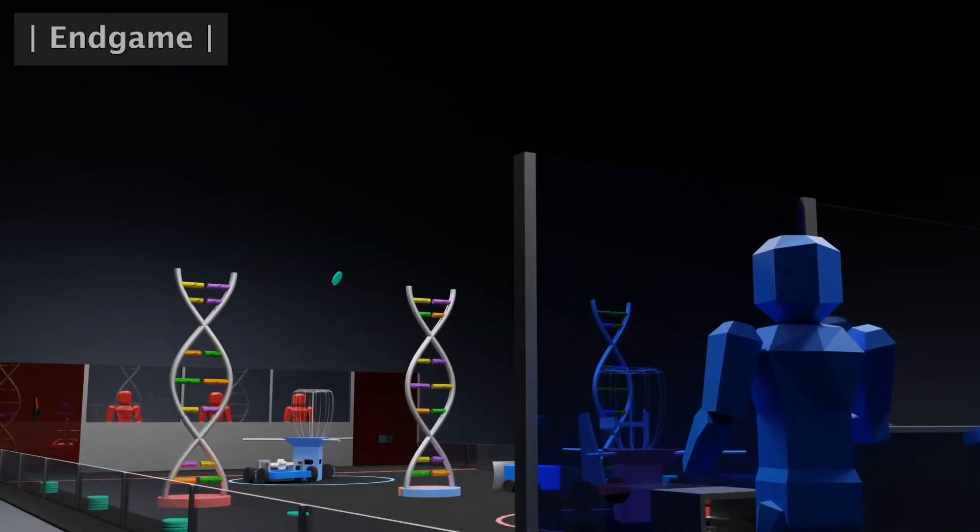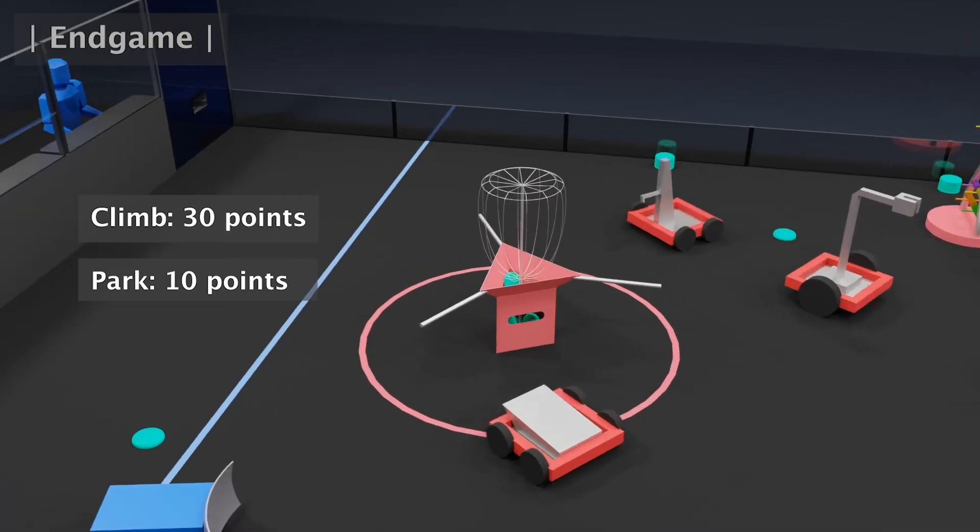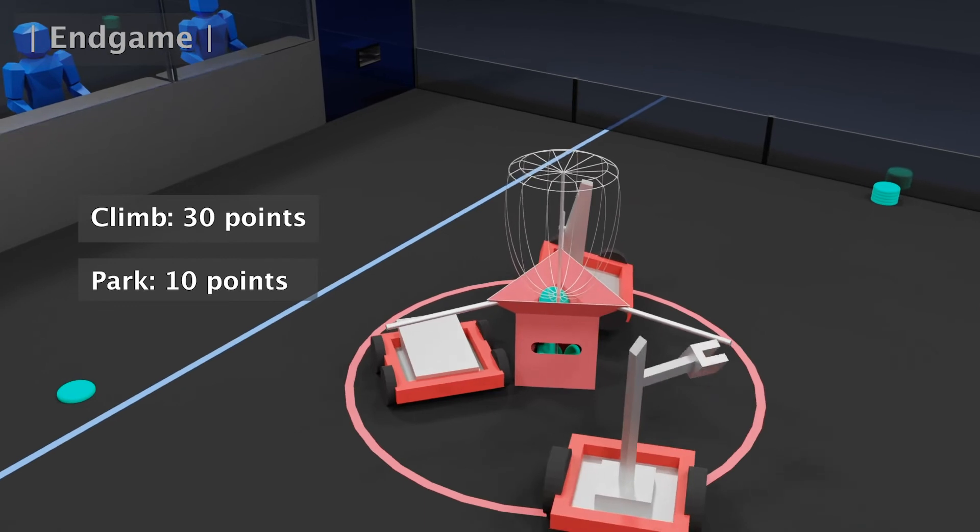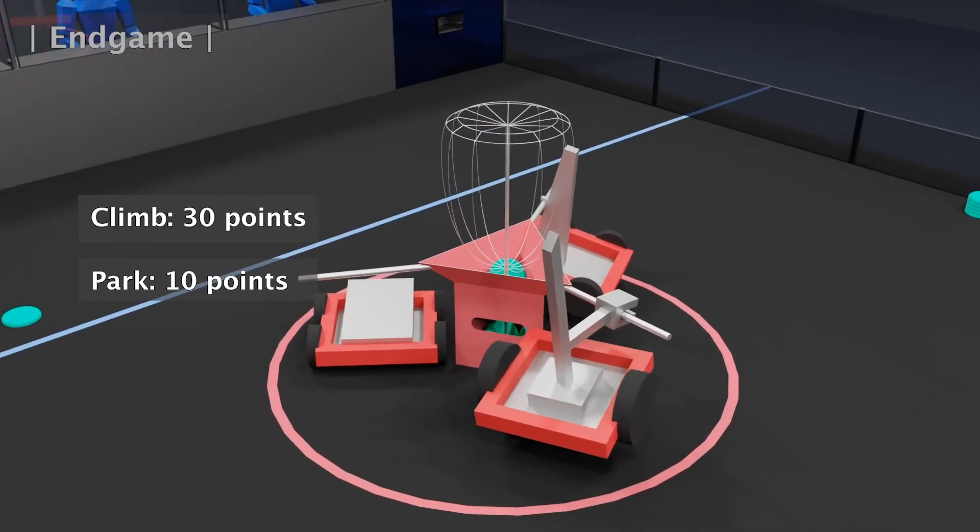During the endgame, nanobots will prepare for protein transport by climbing onto binding sites. Each nanobot that successfully climbs or parks will receive points.